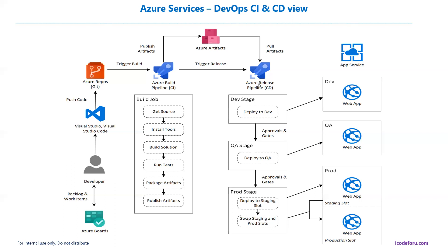Then the release pipeline — continuous delivery — picks up those drop folder files and hosts them into the respective environment. I have a dev stage, QA stage, and production stage, each deployed to its respective subscription. For example, creating a web app in the App Service plan gets deployed to the dev environment. The developer has access to deploy to dev directly, but when it goes to QA and production, you need an approval process — approvals and gates are in place. For production, we use the swap technology: creating a staging slot and then swapping it to production.